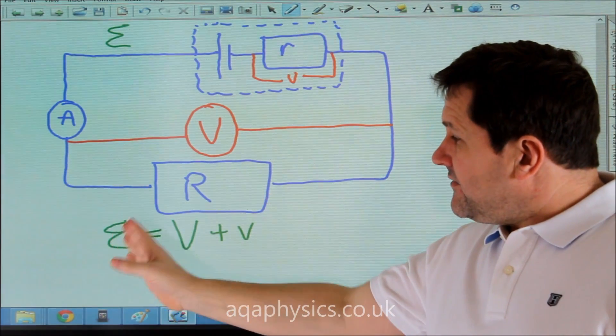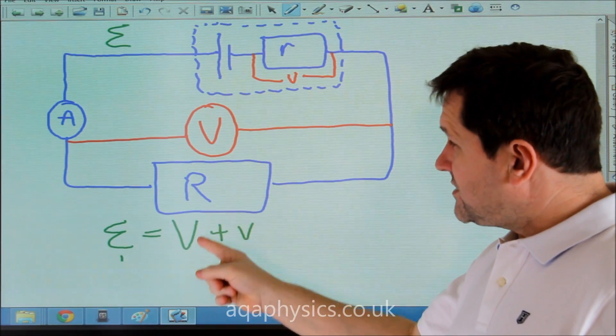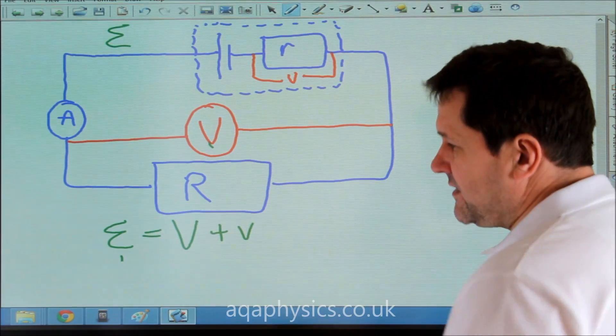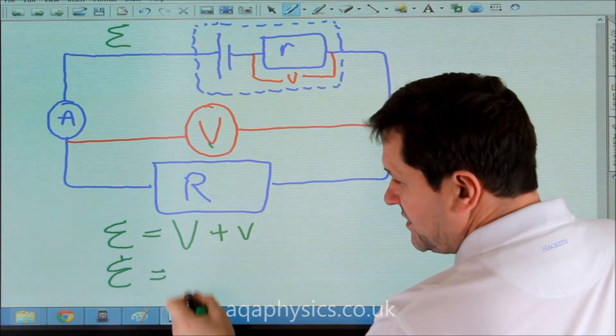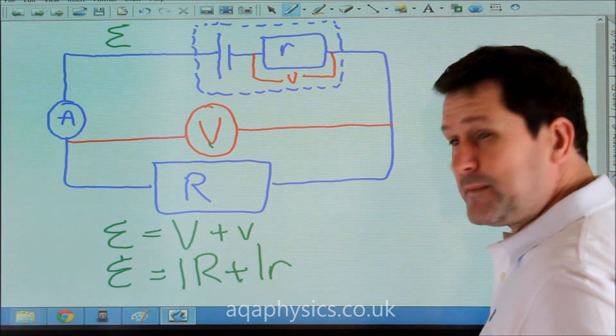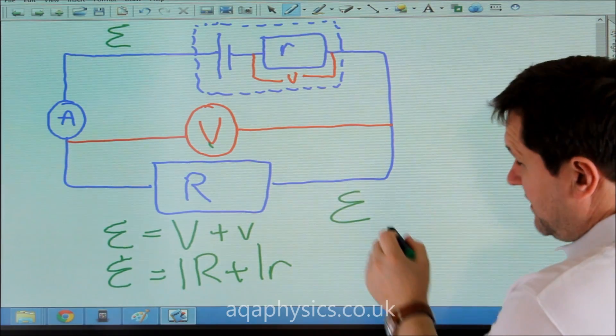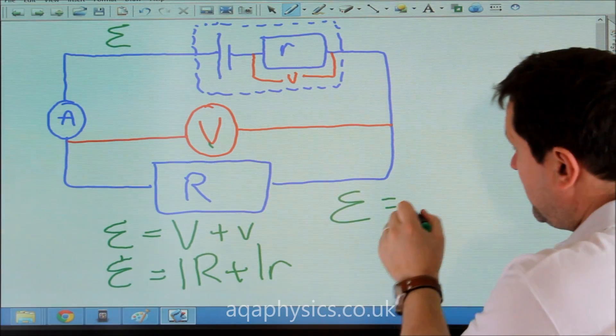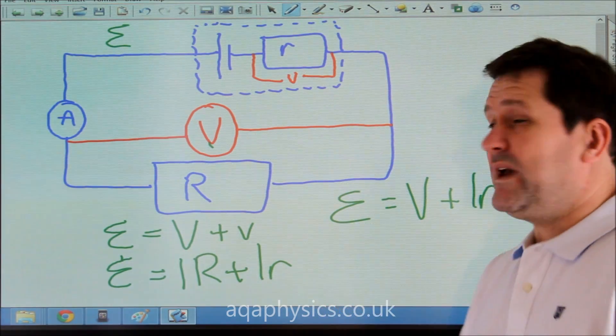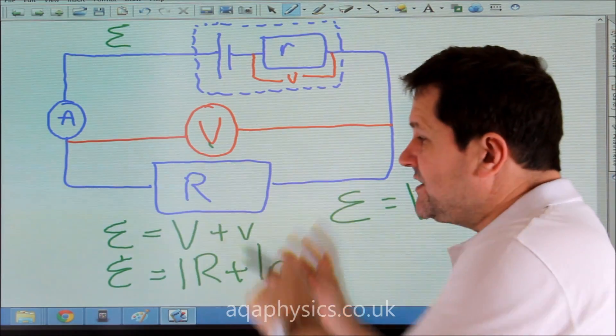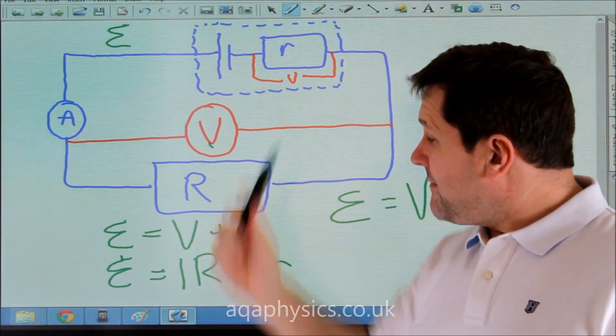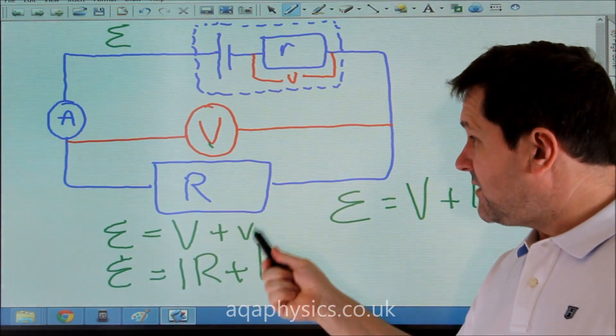Because this here, or EMF, is equal to the voltage lost there, plus the voltage lost there, we can make this equal to other things as well. So we could say the EMF is equal to I, which is the current in the circuit, R plus I little r. Or we could say epsilon, or EMF, is equal to V plus I small r. So there's lots of ways we could rearrange this equation to summarize what the EMF is. But basically, it's EMF equals the voltage lost here plus the voltage lost there.